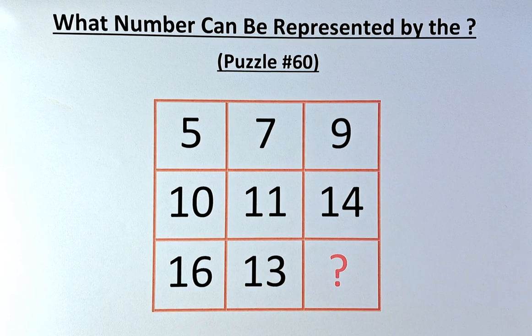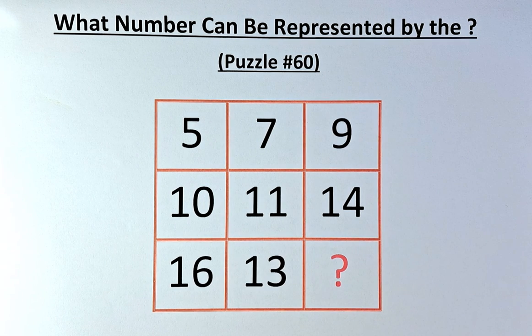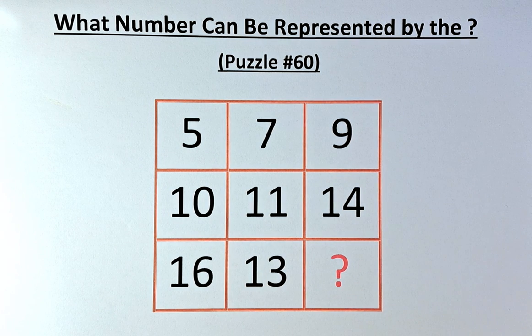Welcome back to the solution of puzzle number 60. The numbers in the puzzles are 5, 7, 9 in the first row, 10, 11, 14 in the second row, and 16, 13 and the question mark in the final row.